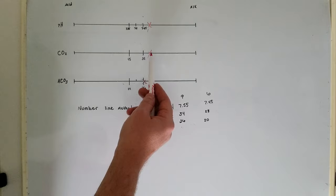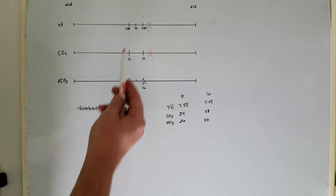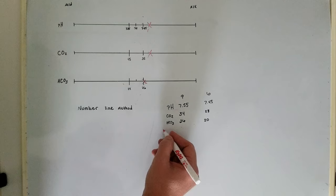You can see down here that the bicarb is not opposite of the CO2, so it's not compensating at all. We're still outside our normal range up here, so we can see that it's not compensated. What we have here is uncompensated respiratory alkalosis.